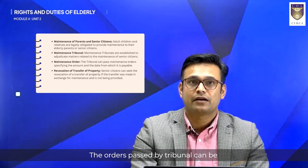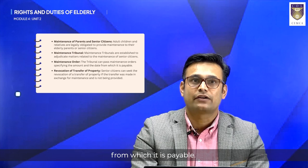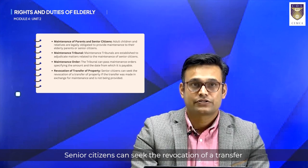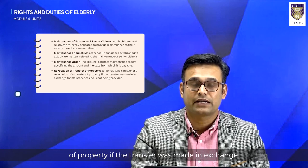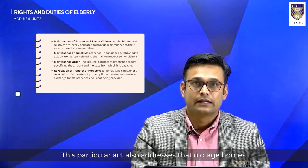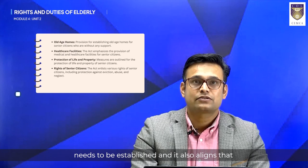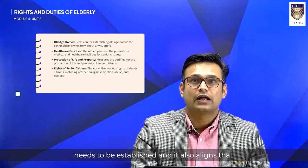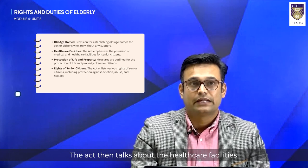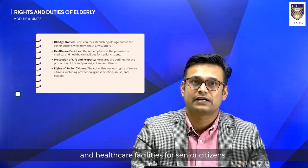The orders passed by the tribunal can specify the amount of maintenance and the date from which it is payable. Senior citizens can seek the revocation of a transfer of property if the transfer was made in exchange for maintenance that is not being provided. This act also addresses that old age homes need to be established and outlines the basic conditions that should be provided in them. The act also specifies that there should be provision of medical and healthcare facilities for senior citizens.